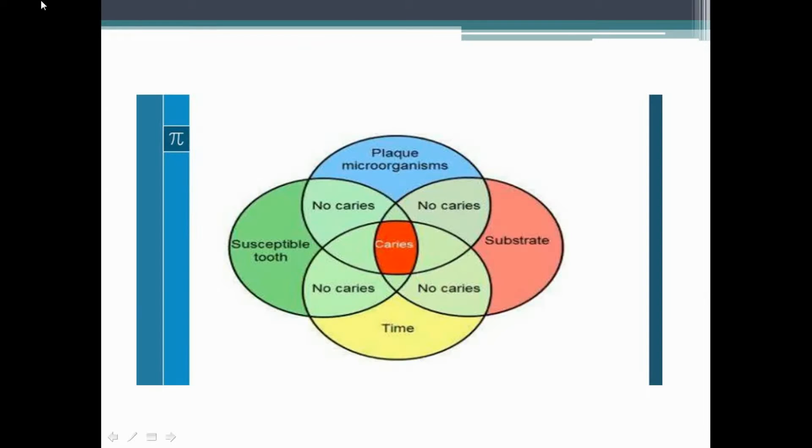the only thing needed for dental decay to develop. In this picture you can see the factors that cause this disease: first bacteria, then complex carbohydrates, sensitive teeth, and time. If one of these factors is missing, tooth decay will not develop.